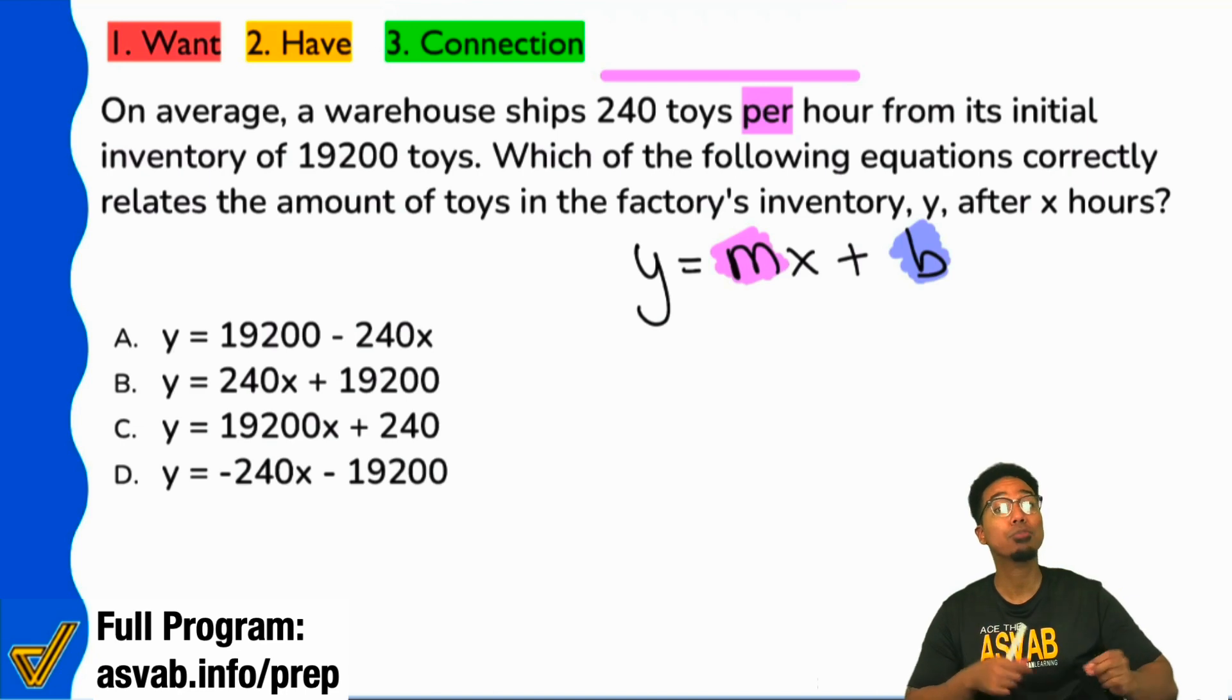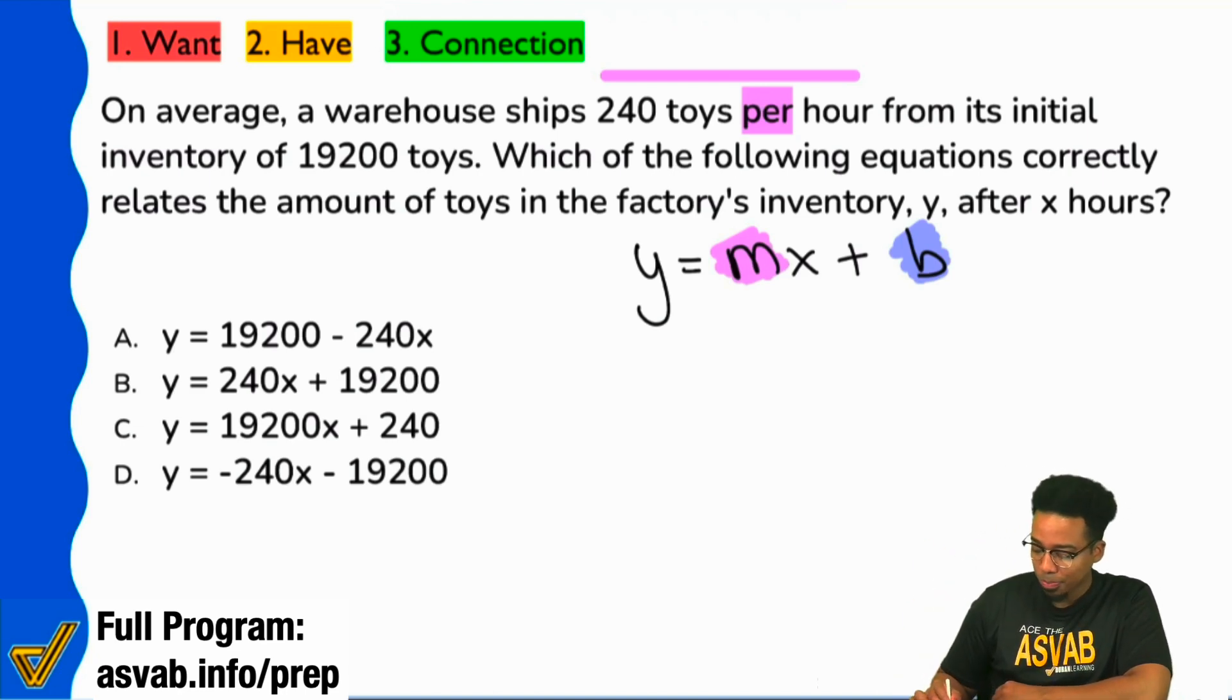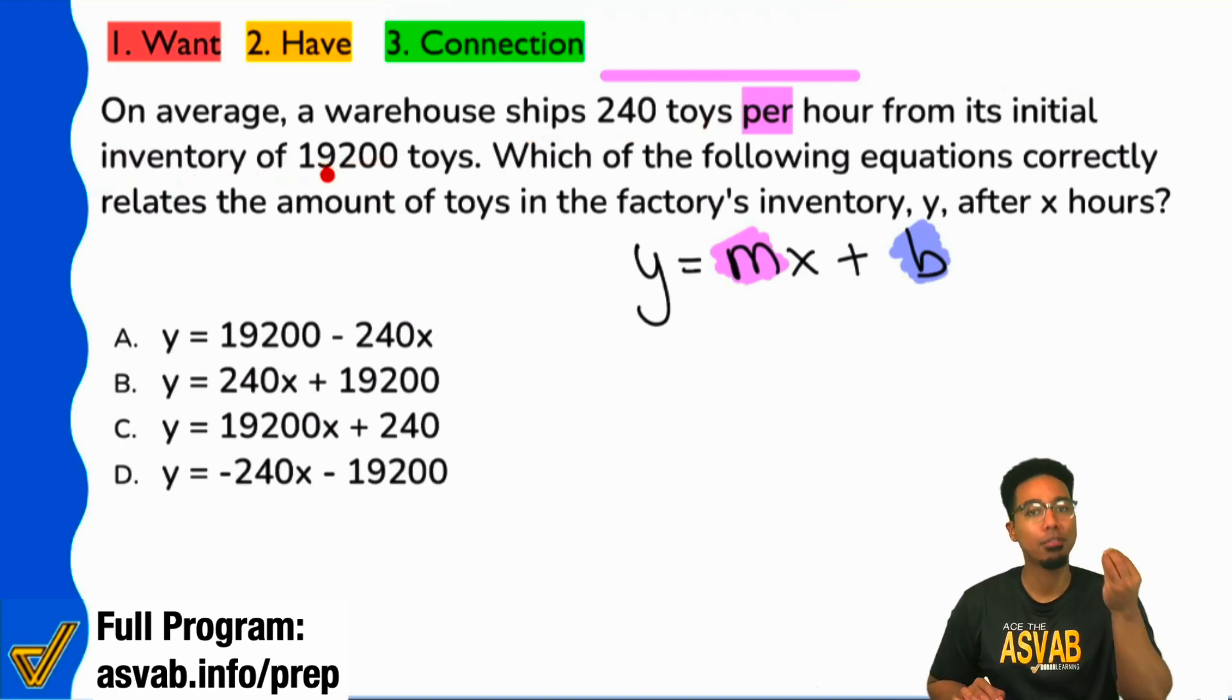Well, read further to see that it says we have the initial or starting inventory of 19,200 toys. So if we're trying to talk about the amount of toys that are in the factory's inventory, if we start off with 19,200...